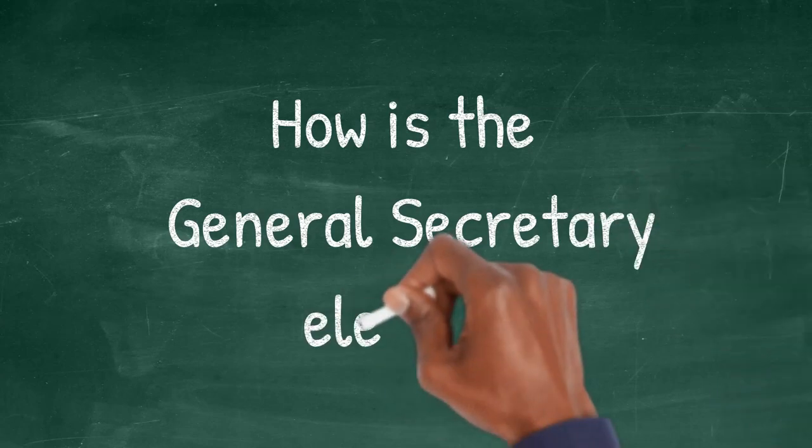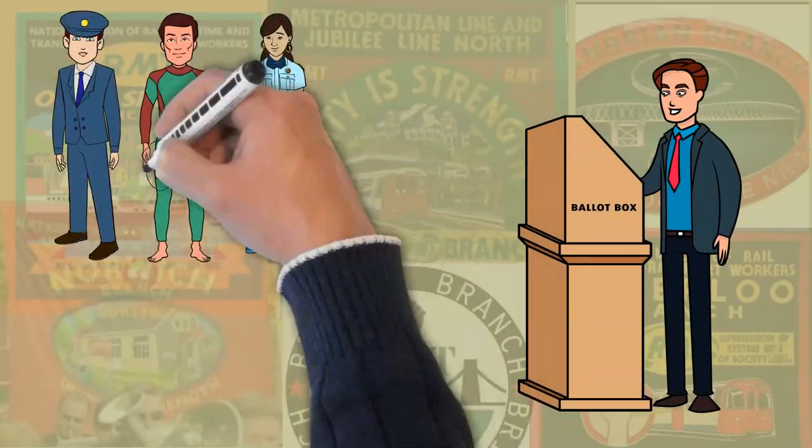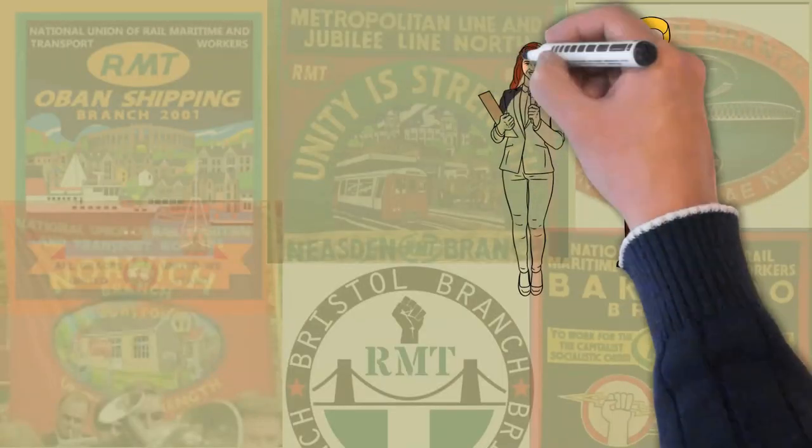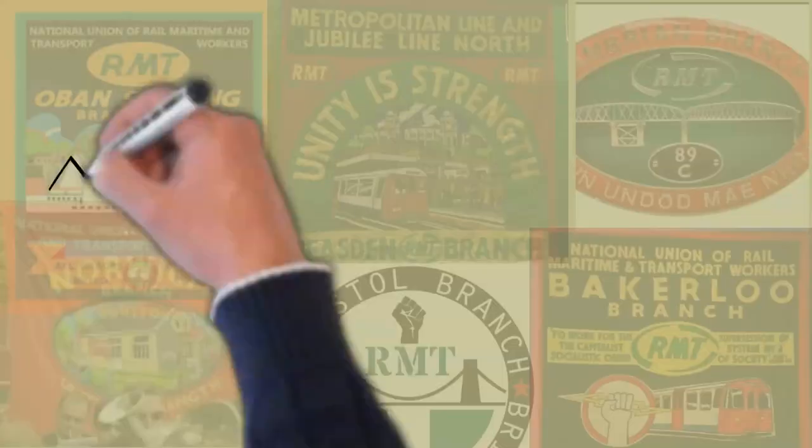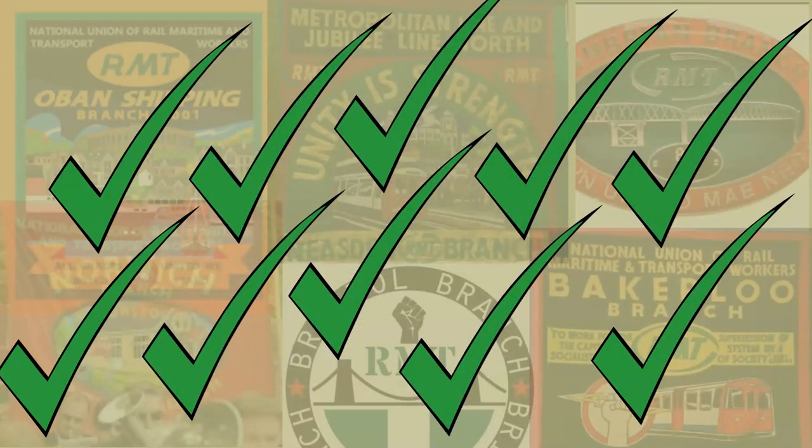How is the General Secretary elected? First, branches nominate candidates. Every member may attend their branch and vote for their preferred candidate. Some branches invite the candidates to speak to the branch and answer questions. Others may circulate material from the candidates. A candidate must receive at least 10 branch nominations to be included in the election.